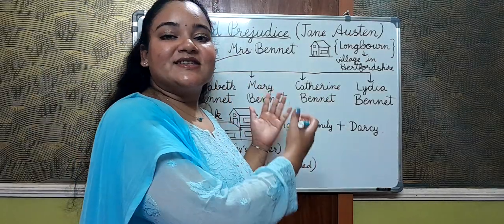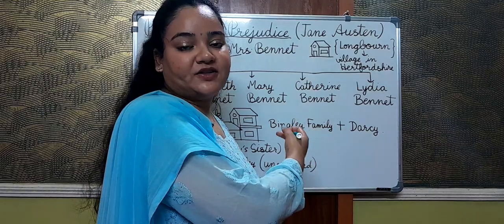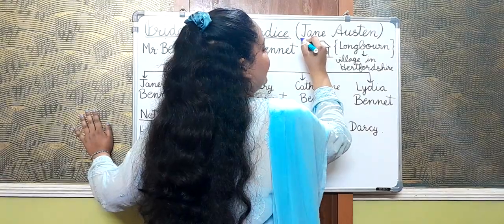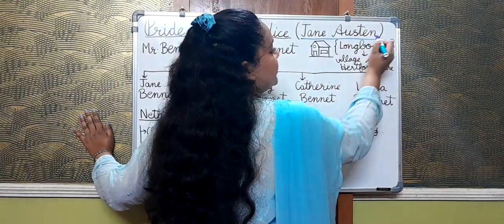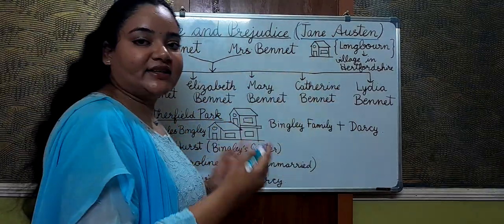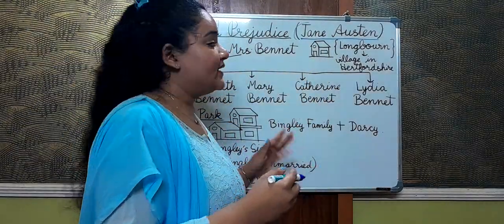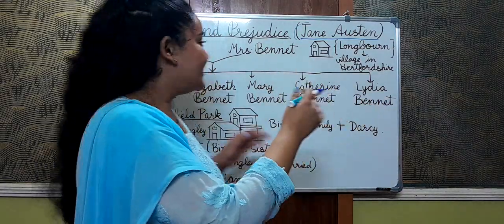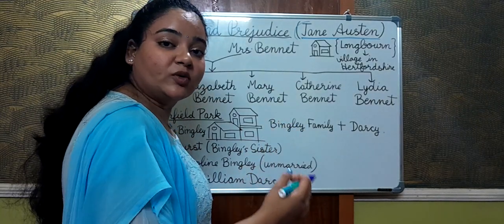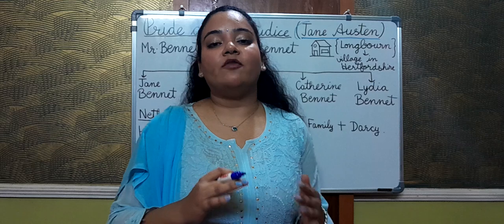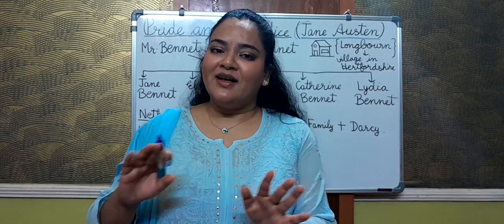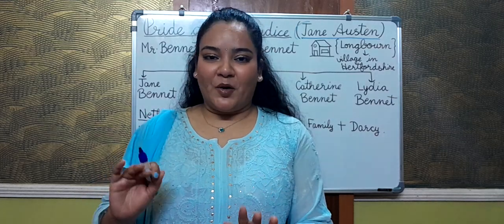Let us start by getting introduced to all the main characters of this novel. Pride and Prejudice is written by the very famous novelist Jane Austen. I will also teach you about Jane Austen — her biography, writing style, and important novels — but that will be in later videos. For now, we are going to go through all the main characters who appear quite frequently, because to study a novel appropriately it is very important to be acquainted with the main as well as sub-characters.